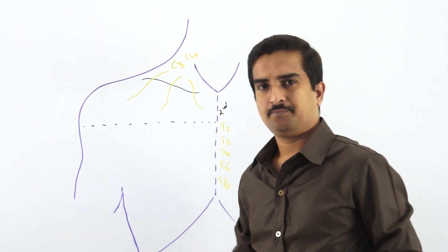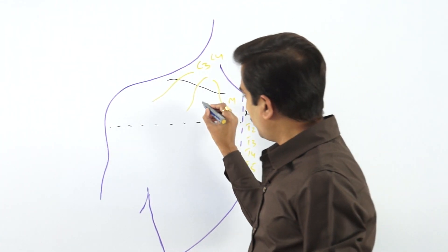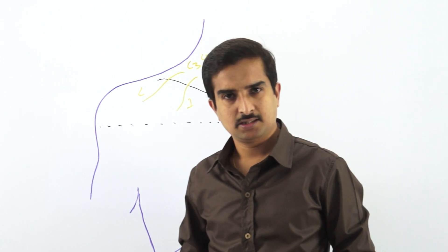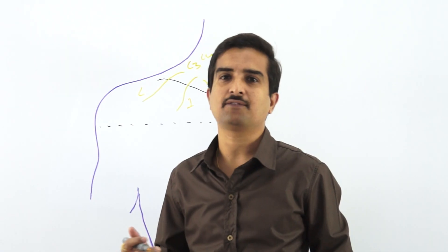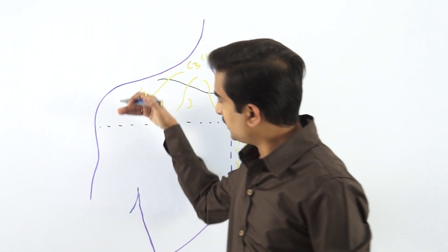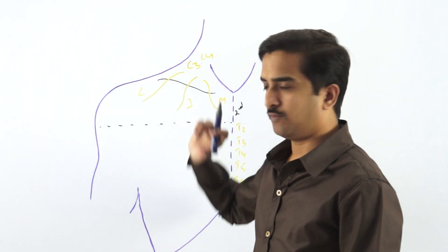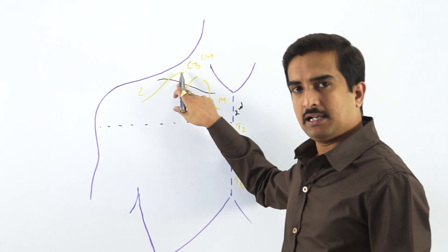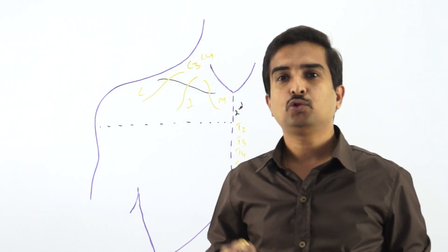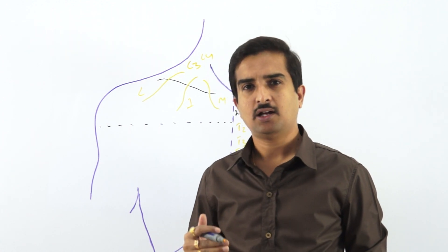There are three supraclavicular nerves: the medial supraclavicular nerve, the intermediate supraclavicular nerve, and the lateral supraclavicular nerve. These nerves are branches of the cervical plexus from C3 and C4. They supply the skin over the upper half of the deltoid and from the clavicle down to the second rib. These three nerves — medial, intermediate, and lateral — are located in the superficial fascia of the upper part of the pectoral region.